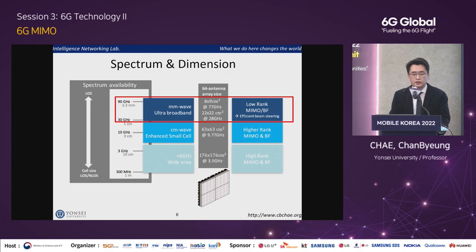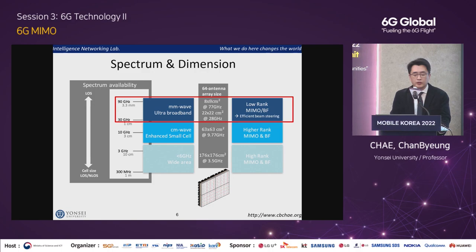There is no doubt that millimeter wave plays a key role in 5G. However, due to its severe path loss issues, we need multiple antennas to achieve higher directivity gain. Suppose we need 64 antenna elements. For sub-6 GHz spectrum, say 3.5 GHz, the array size should be approximately 176 by 176 cm, which is too big. On the other hand, for millimeter wave spectrum, it's only 8 by 8 at 77 GHz, and 22 by 22 at 28 GHz spectrum — about the size of a palm. So it's feasible.